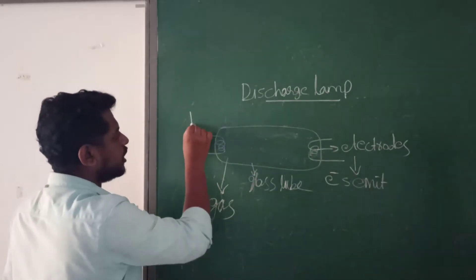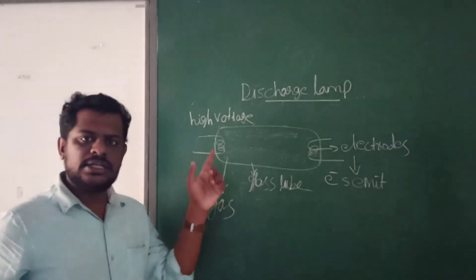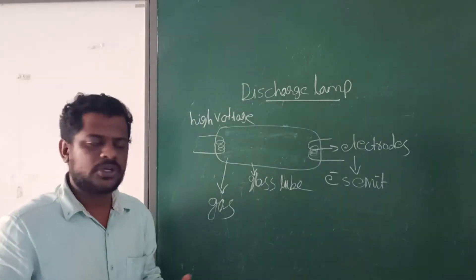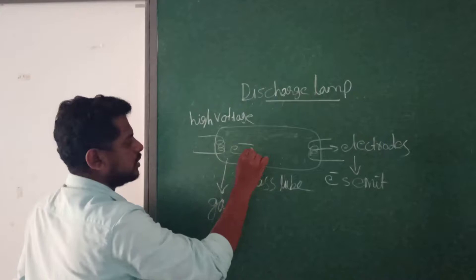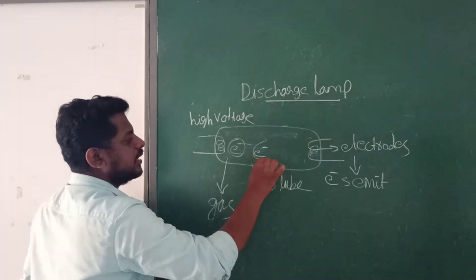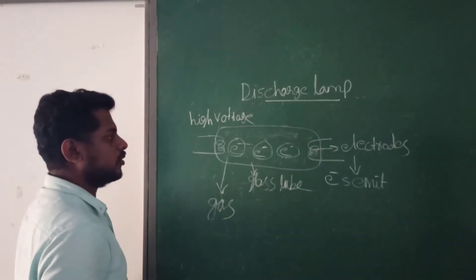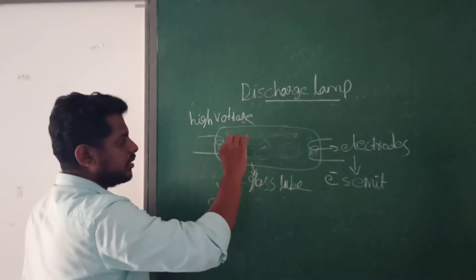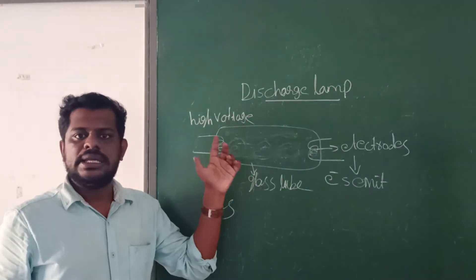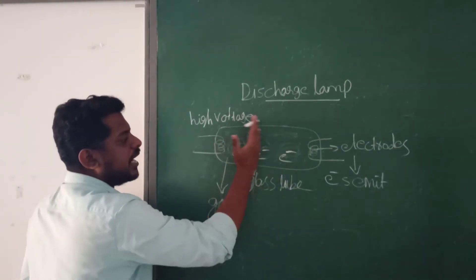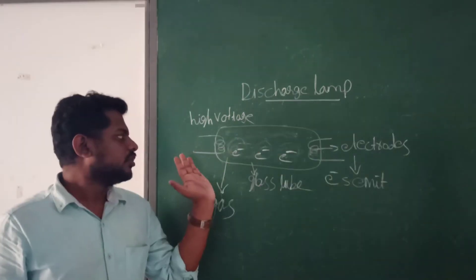Now the working principle: when a high voltage or high potential difference is applied, current passes through the electrodes and electrons will emit from them. These electrons pass through the gas molecules inside the tube — a discharge is created, meaning charge is moving through the gas molecules.